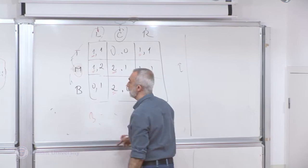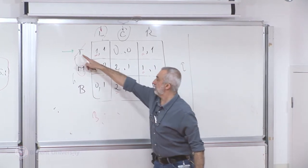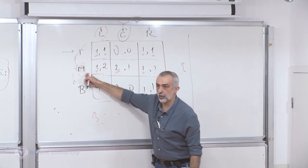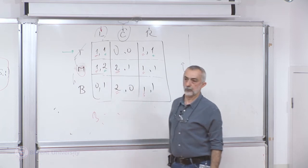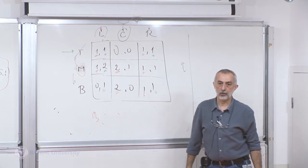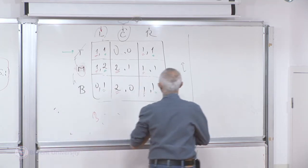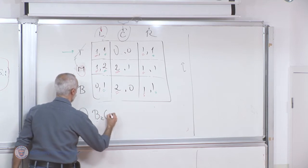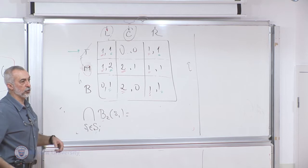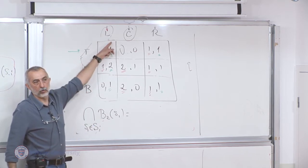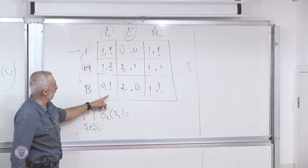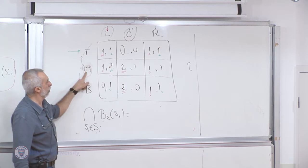I can do the same thing for player 2. This time, player 2 takes the strategy of player 1 as given. Given player 1 plays T, the maximum payoff player 2 can get is 1. Given player 1 plays M, it's 2. Given player 1 plays B, it's 1. So what can I say about the intersection? This time we look for a column which is all marked. This column is all marked because L is the best response to T, to M, and to B.